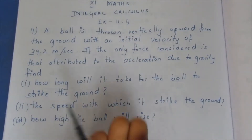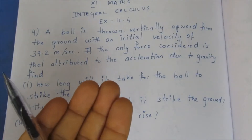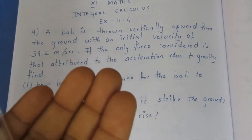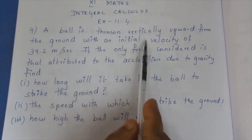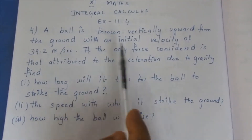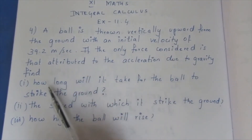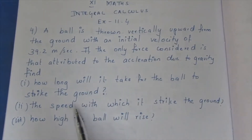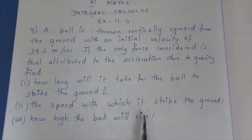At a certain time the ball reaches the top and comes back. The only force considered is the acceleration due to gravity. We need to find: how long will it take for the ball to strike the ground, the speed with which it strikes the ground, and how high the ball will rise — the maximum height the ball will reach.